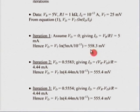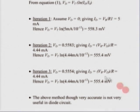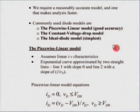In the second iteration, use V_d = 0.5583 V to recalculate I_d = (V_b - V_d)/R = 4.44 mA — down from 5 mA. Recalculating V_d gives 555.4 mV, very close to the previous result. The third iteration gives the same value, meaning in just two iterations you got the exact value. This method is quite accurate but unfortunately not very useful in general diode circuit analysis, because most of the time you do not want this much accuracy — you want a reasonably accurate but faster model.